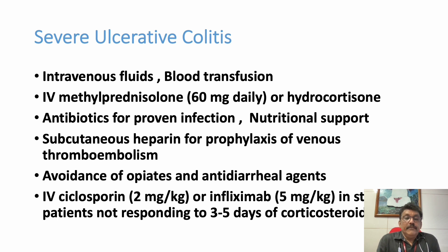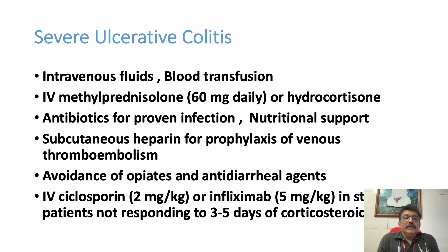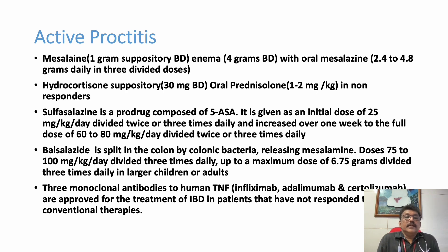Opiates and antidiarrheal drugs should be avoided, because giving antidiarrheal drugs to these patients can produce toxic megacolon. IV cyclosporine 2 mg/kg or infliximab 5 mg/kg can be given in patients not responding to initial corticosteroid therapy. For active proctitis, mesalazine 1 gram suppository twice daily or enema 4 grams twice daily, then oral mesalazine 2.4 to 4.8 grams daily in 3 divided doses. Hydrocortisone can be given as suppository or tablets. Sulfasalazine, a prodrug for 5-ASA, can be given at 25 mg/kg/day.